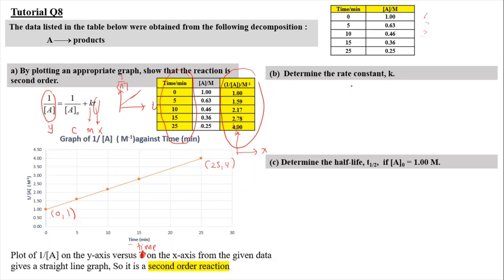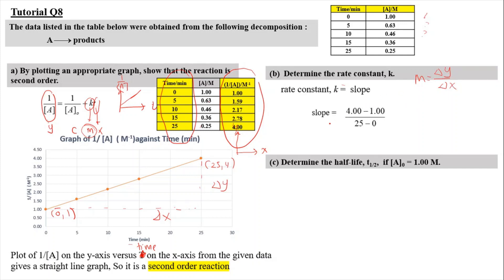For part B, determine the rate constant K. The rate constant K is determined by calculating the slope or gradient of the graph: slope equals delta Y over delta X. Taking the last point and initial point: (4 minus 1) divided by (25 minus 0) gives K equal to 0.12 per molar per minute. Be careful with units: you are dividing per molar by minutes, so the unit is per molar per minute.